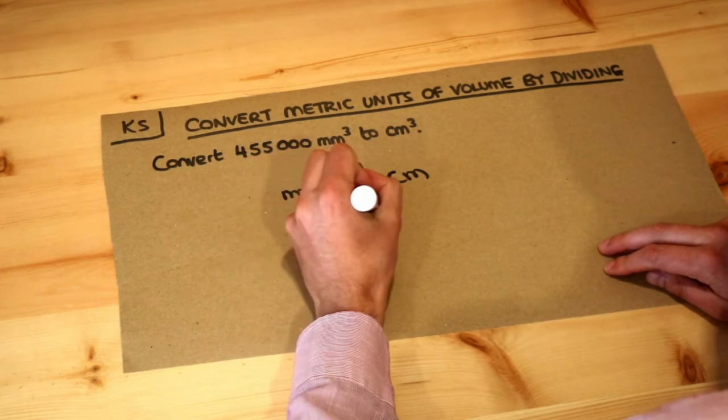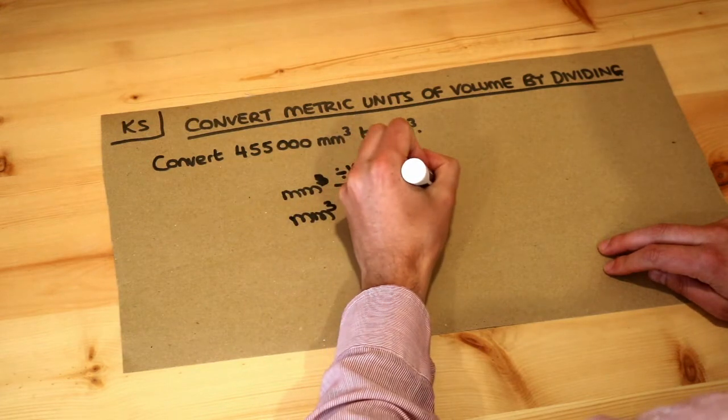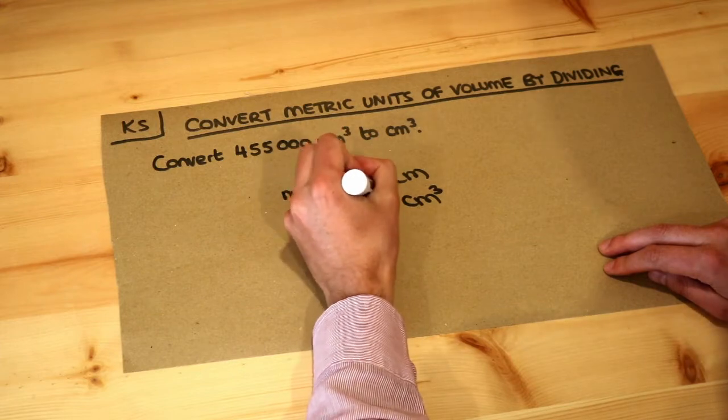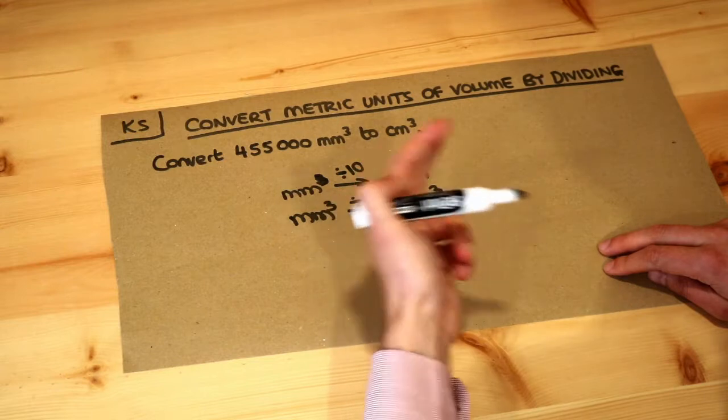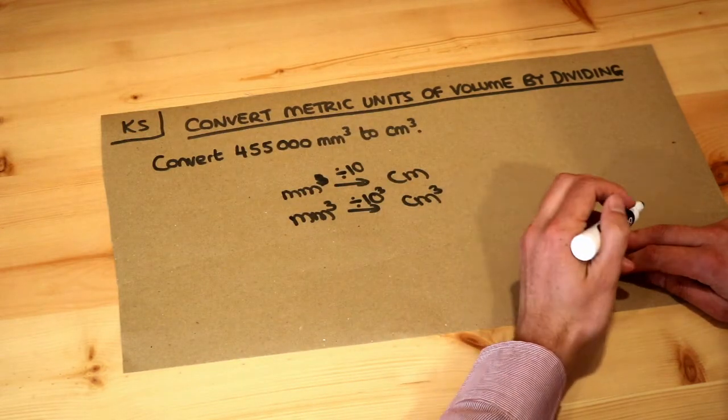In that case, if you go from millimeters cubed to centimeters cubed, you don't divide by 10, but you divide by the scale factor of 10 cubed to match the power. We explore why this works in the previous video on converting metric units of volume by multiplying.